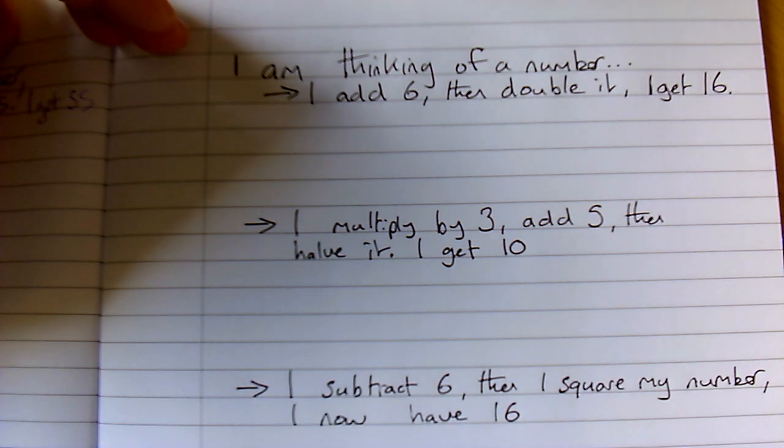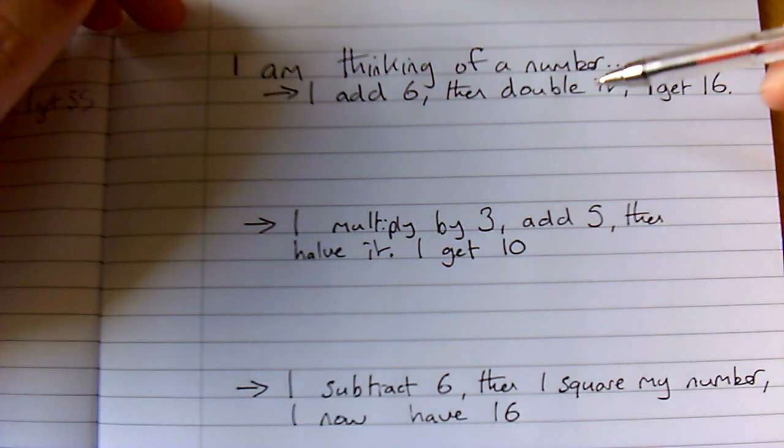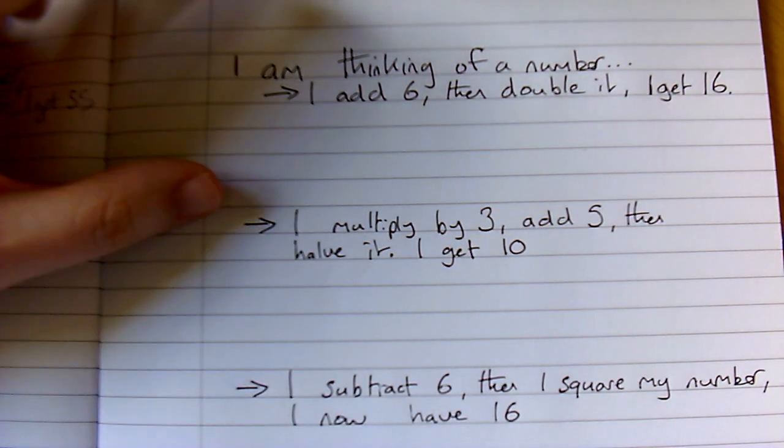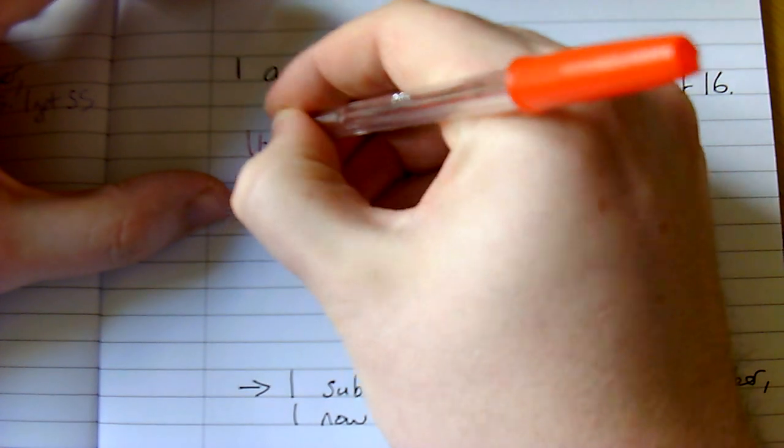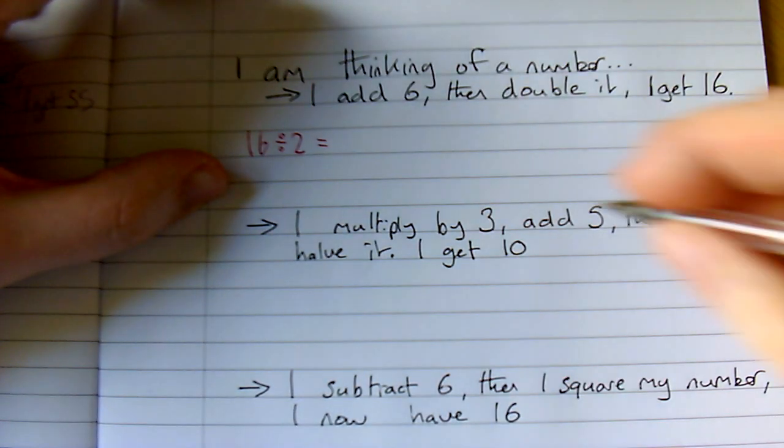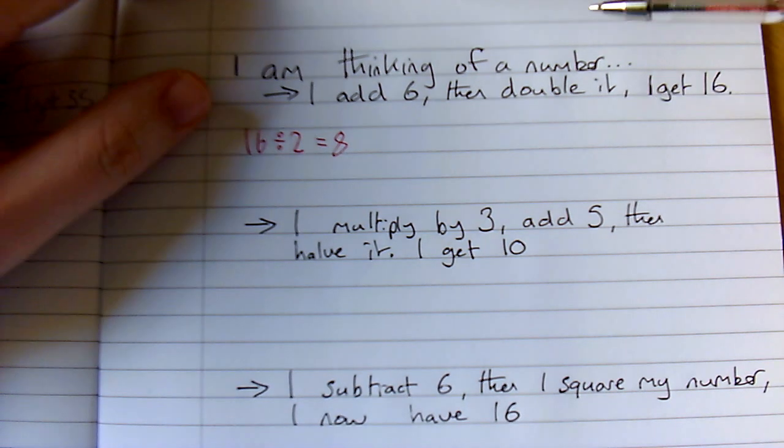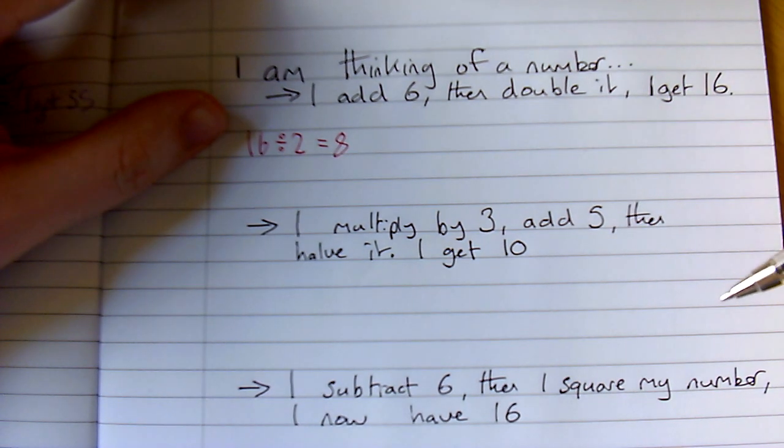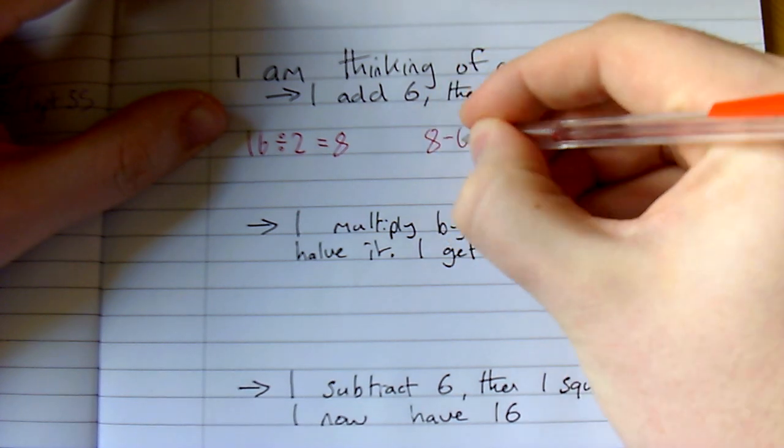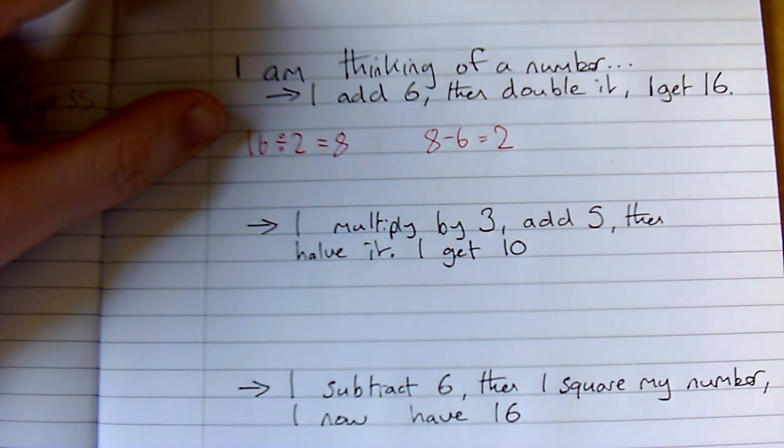To solve this I need to work backwards. So if my last step was to double it and get 16, I then need to halve it. So I'm going to do 16 divided by 2, which will give me 8. The step before that was adding 6. To work backwards there I need to subtract 6, so I'm going to do 8 subtract 6 equals 2.